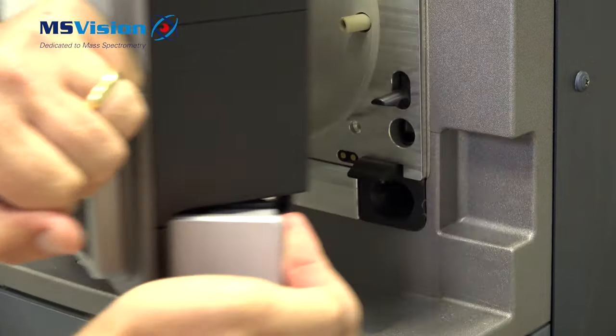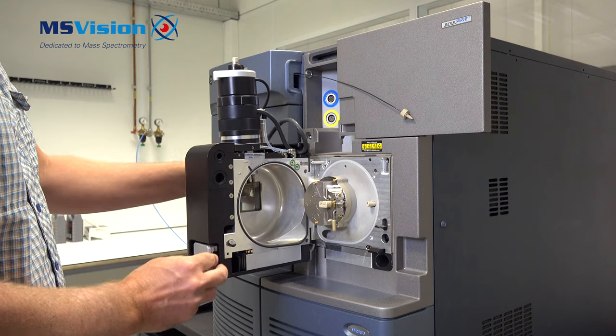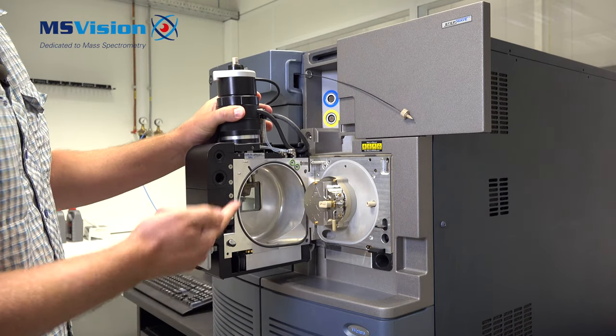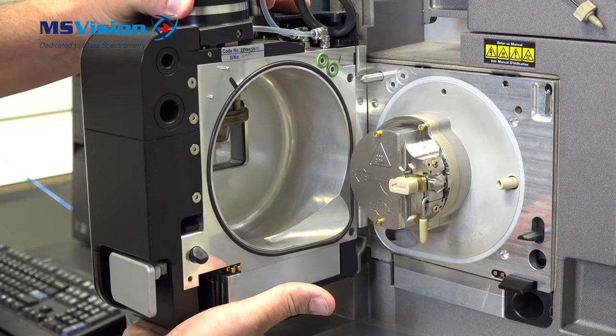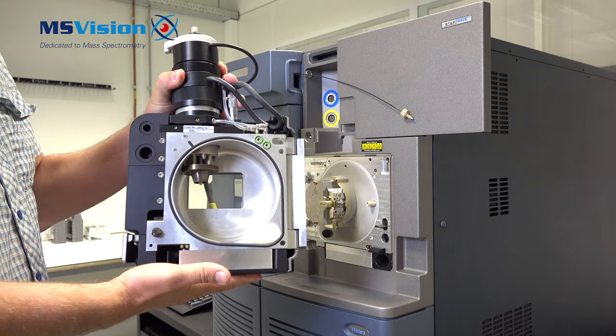Open the source enclosure door using the lever and hold with both hands. Be careful, it might be hot, at least here on the bottom side. We can remove by lifting up and then pulling towards you.